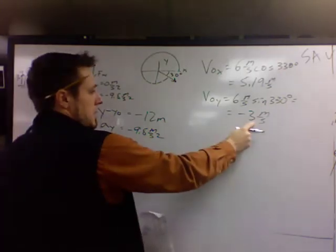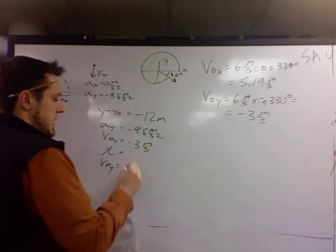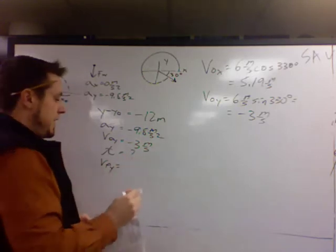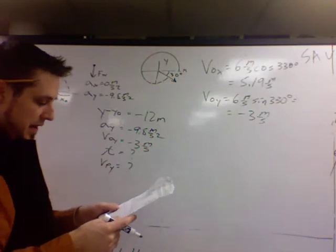Initial velocity in the y, we've already found it. Component, negative 3 meters per second. And time, don't know. That's what I'm trying to find. And v final in the y, don't know. We'll eventually try to find that as well.